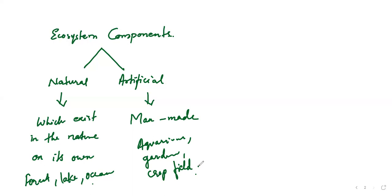As I already told you, in an ecosystem the two components are natural and artificial ecosystem — these are two types of ecosystems. We already know there are two components of ecosystem: biotic and abiotic. The biotic component is further divided into certain classifications.